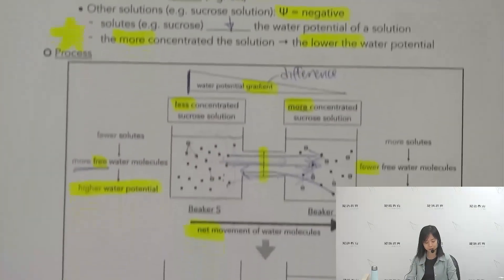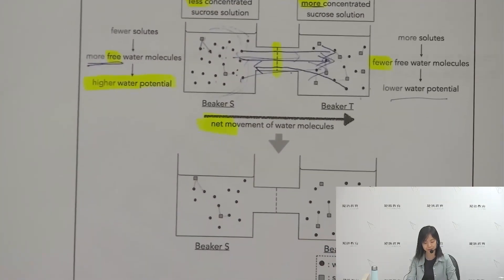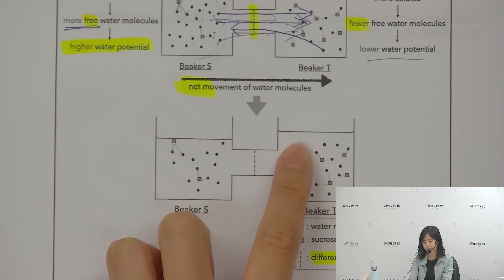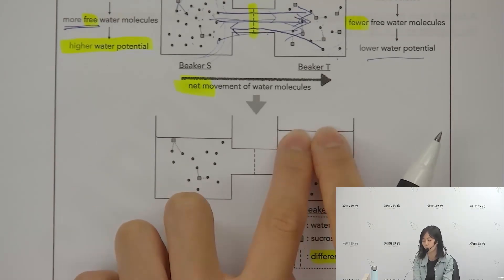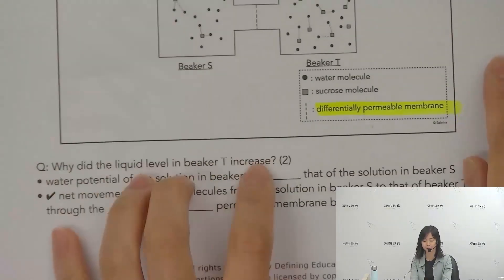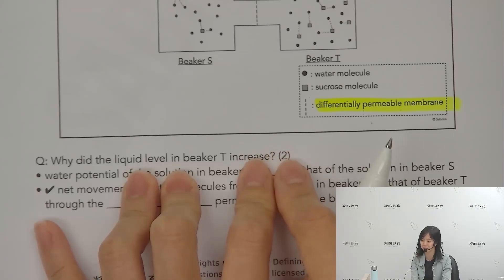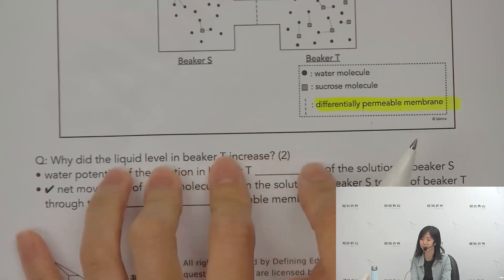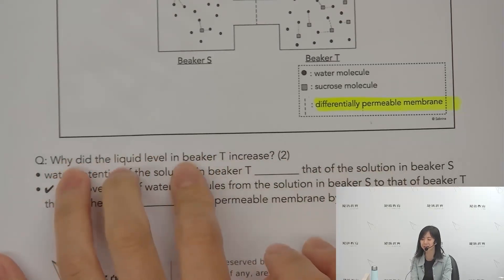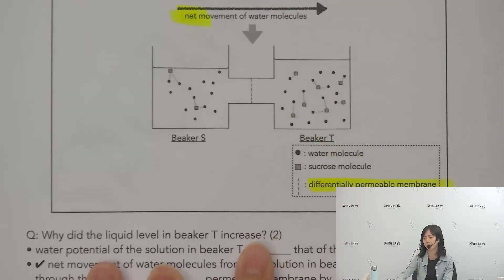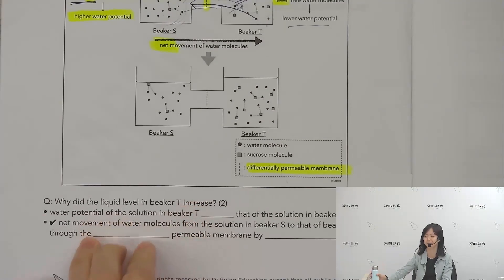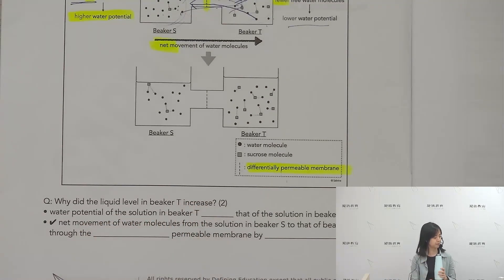Osmosis is a passive process — it does not require energy. You will now see that the liquid level in Beaker T has risen. There is a two-mark question for you to try: fill in the blank and think about how to answer why the liquid level in Beaker T rises.